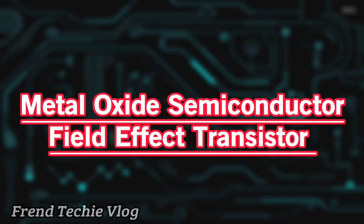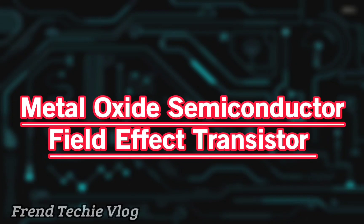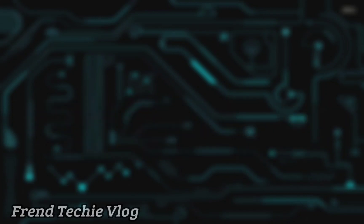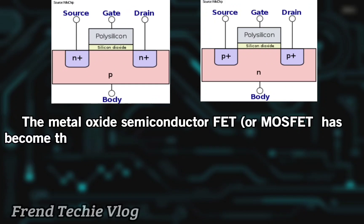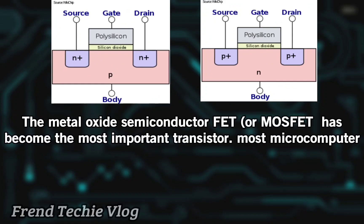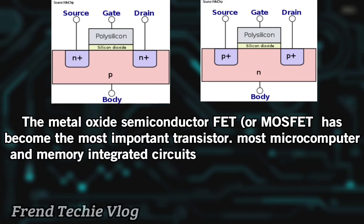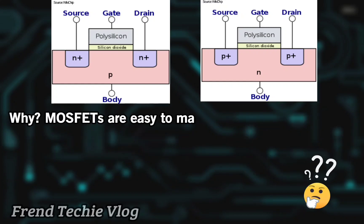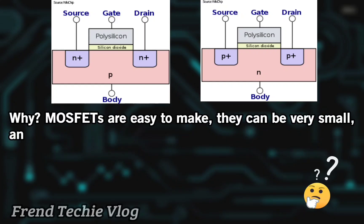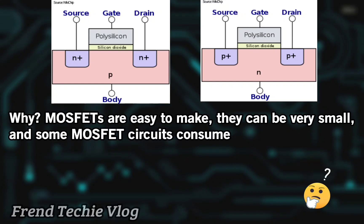The metal oxide semiconductor field effect transistor, or MOSFET, has become the most important transistor. Most microcomputer and memory integrated circuits are arrays of thousands of MOSFETs on a small sliver of silicon. MOSFETs are easy to make, they can be very small, and some MOSFET circuits consume negligible power.